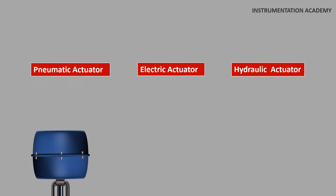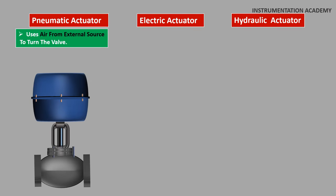Pneumatic actuator use an air or gas signal from an external source to turn the valve. Pneumatic actuators are the most commonly used actuator for valves in the process and oil industries. In this type the compressed air is applied either on a diaphragm or on a piston which in turn moves the valve stem.